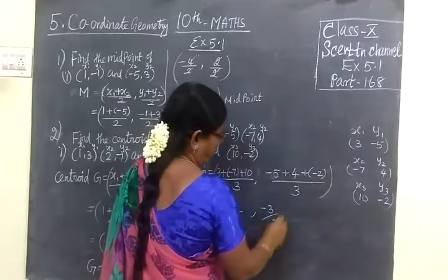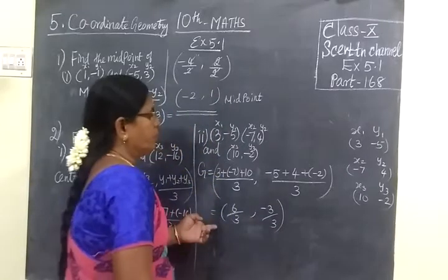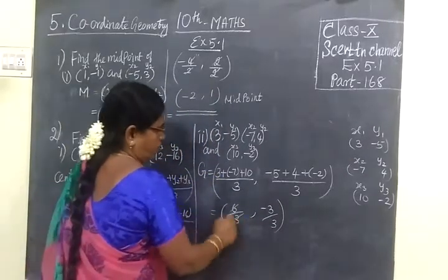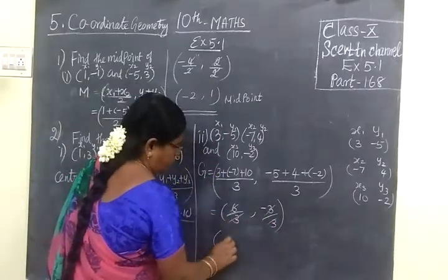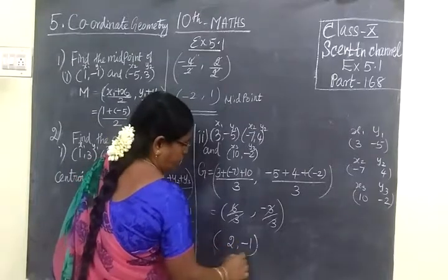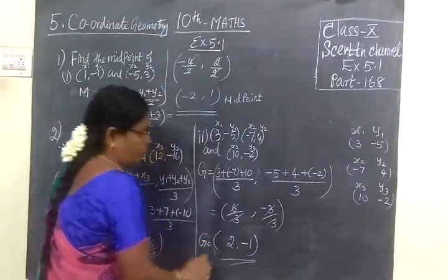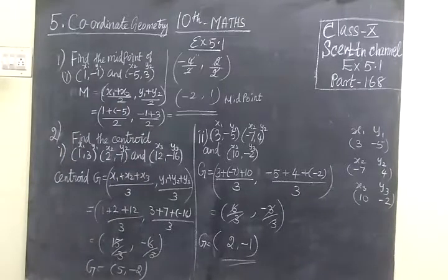So minus 7 plus 4, minus 3. So if we cancel, the answer is 2 comma minus 1. This is the answer for this question.